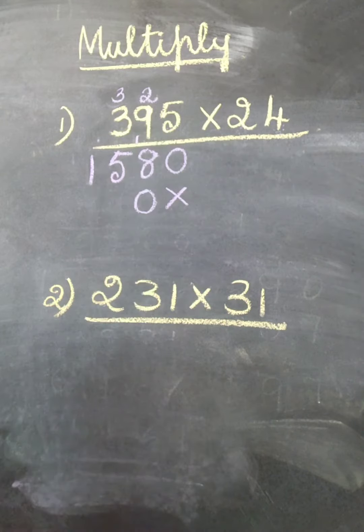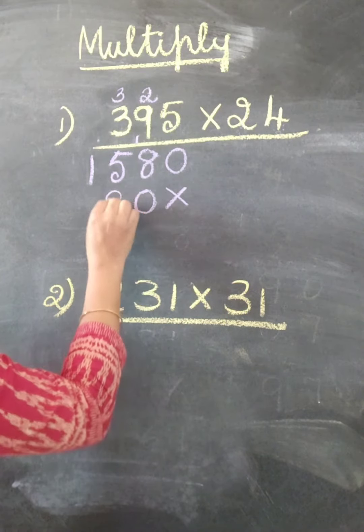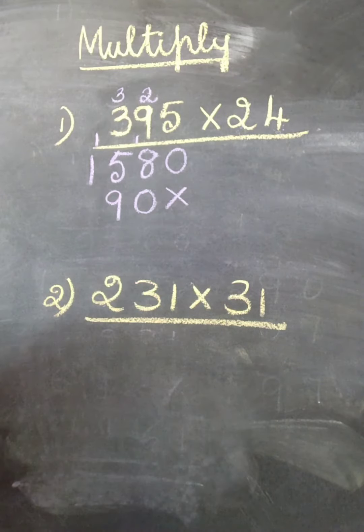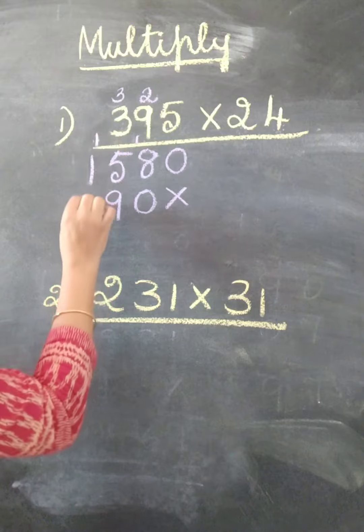2 times 9 is 18 plus 1. 19. Write 9 here, 1 you may write here. 2 times 3 is 6 plus 1 is 7.